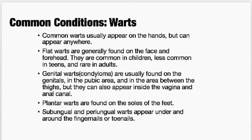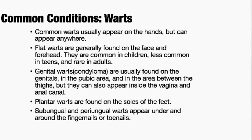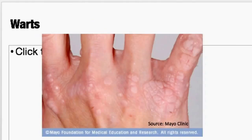Warts can be anywhere. They typically appear on the hands but you can see them anywhere, especially genital warts. Common warts are usually on the hands. Flat warts can be on the face and forehead, commonly found in children, and tend to typically go away. Genital warts are usually found in the genitals, the pubic area, between the thighs, and can also be inside the vagina, near the anal canal, and sometimes inside the anal canal. Plantar warts are found on the soles of the feet. Subungual and periungual warts are on or in and around the fingernails and toenails. They tend to have this cauliflower-ish look.